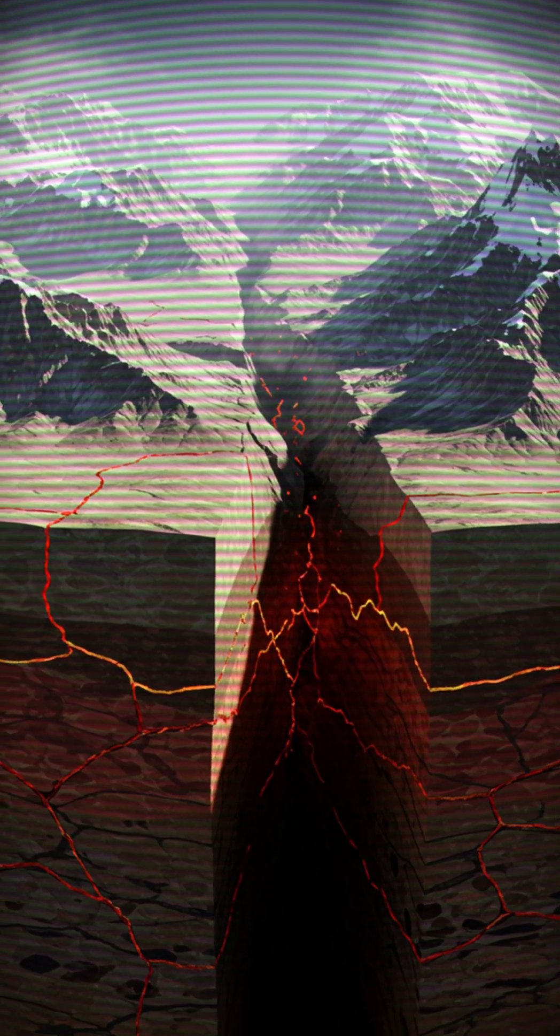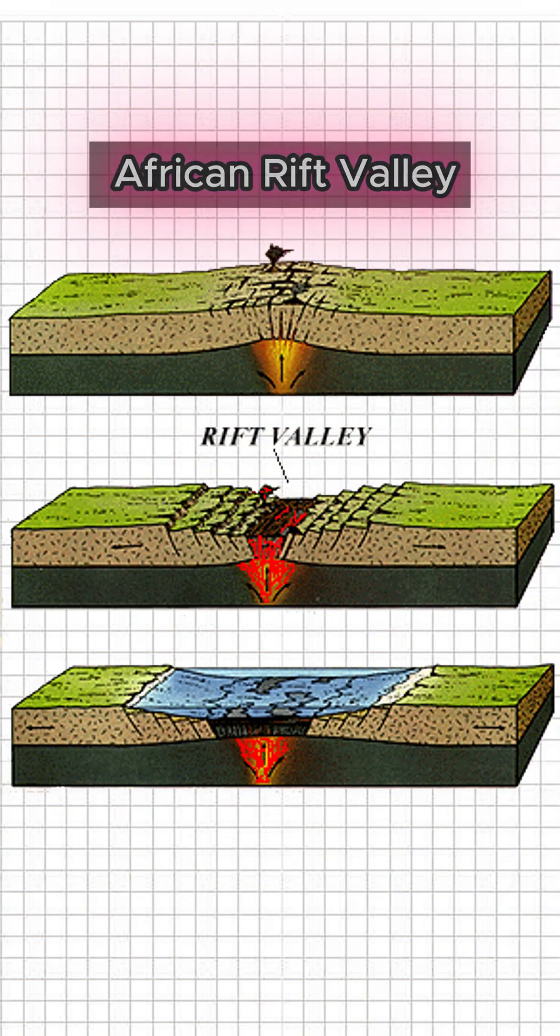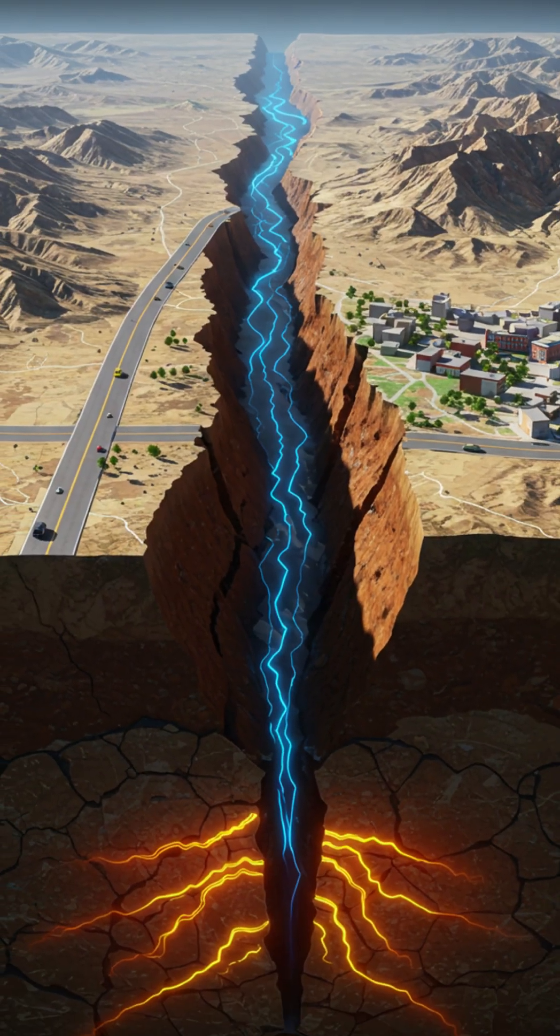When these plates collide, they create mountains like the Himalayas. When they pull apart, they form valleys like the African Rift Valley. When they slide past each other, earthquakes happen like at San Andreas Fault.